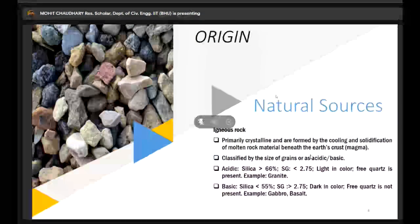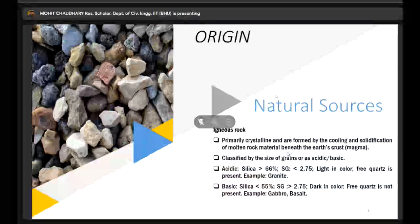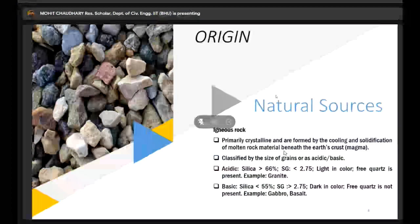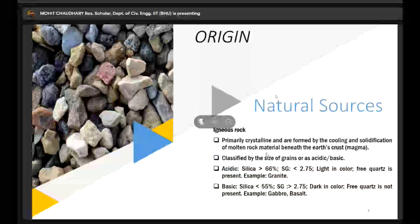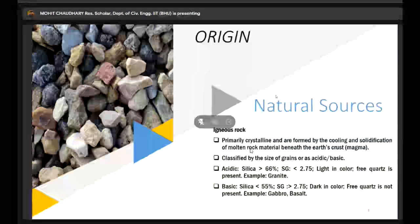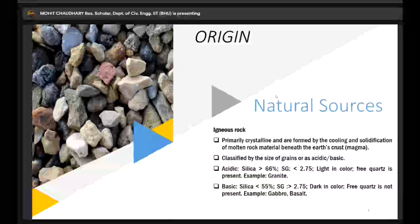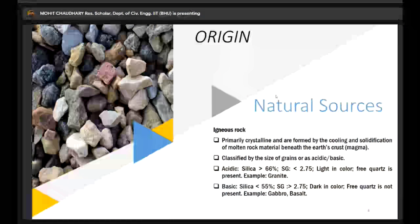Second one is basic. It's just the opposite of acidic - silica content is very low, specific gravity is high, and it is dark in color. Some common examples of basic rocks are gabbro or basalt. I will give you a quick glimpse of these rocks.